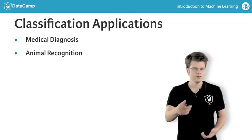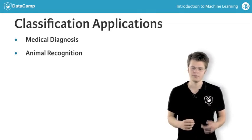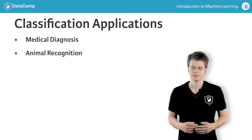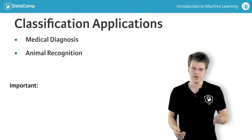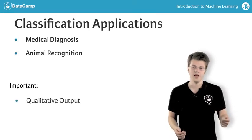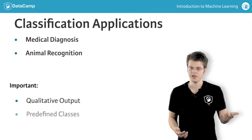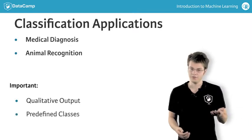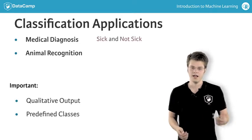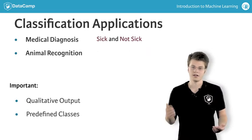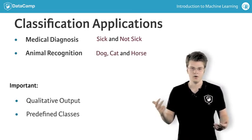Can you think of a possible classification problem yourself? What's important here is that first, the output is qualitative, and second, the classes to which a new observation can belong are known beforehand. In the first example, the classes are sick and not sick. In the second example, the classes are cat, dog and horse.